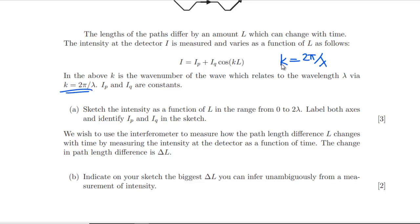The intensity is measured, lengths of the paths differ by amount L, intensity at detector I is measured and varies as that function. In the above, k is the wave number of the wave which relates to the wavelength λ via that. Also got this equation making it a bit clearer. Ip and Iq are constants.